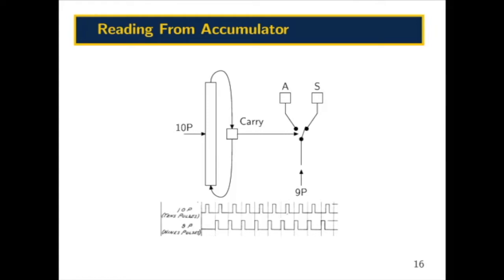When the carry bit is flipped, it changes the routing of a group of 9 pulses. Those 9 pulses will either give you, on one output, the number stored in the accumulator, or 9 minus the number stored in the accumulator. This allows us to do subtraction in the machine. We will illustrate that in the simulator.